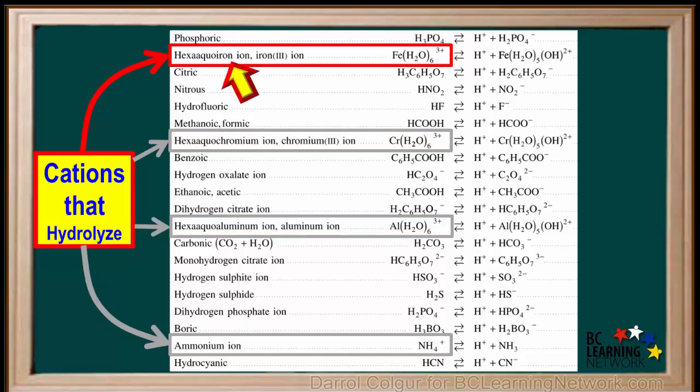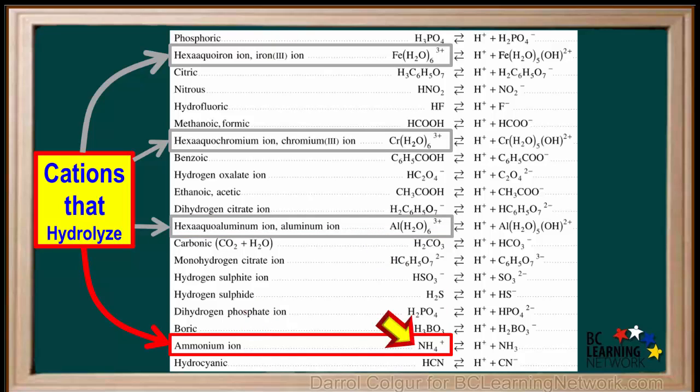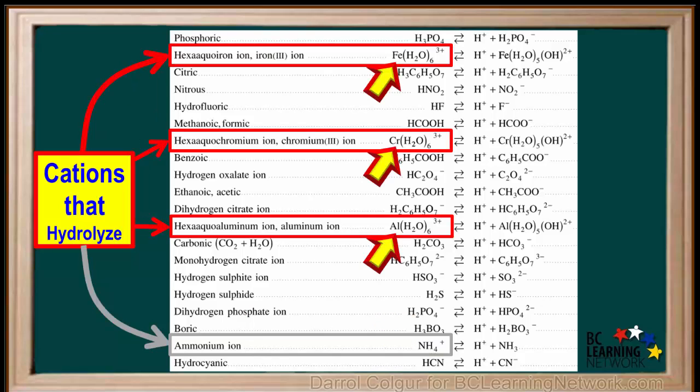The hexa-aquil iron ion with the formula Fe(H2O)6 3+, the hexa-aquil chromium ion with the formula Cr(H2O)6 3+, the hexa-aquil aluminum ion with the formula Al(H2O)6 3+, and the ammonium ion with the formula NH4+. We'll take a closer look at these three ions, the ones whose names start with hexa-aquil.